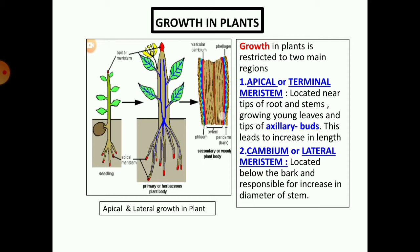They are broadly classified under two groups. The apical or terminal meristem, located near the tip of roots and stems, growing young leaves, and tips of axillary buds — this leads to increase in the length of the plant. Second, cambium or lateral meristem, located below the bark, is responsible for increase in diameter of the stem.